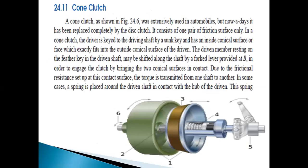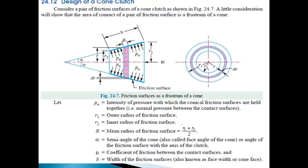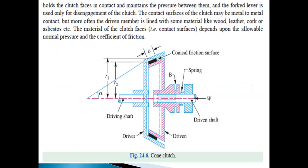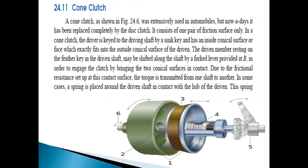Next we have the cone clutch, which is used in automobiles. In the cone clutch, we have a female cone which is the inside part, and a male cone. The flywheel is connected to the cone clutch assembly.